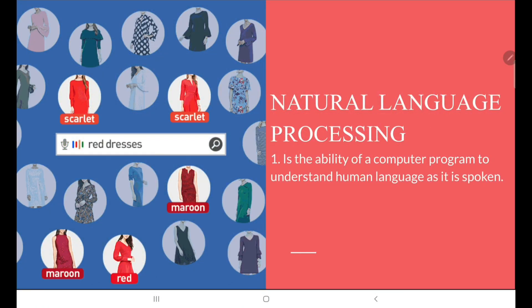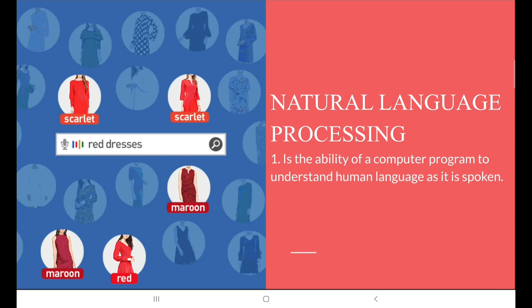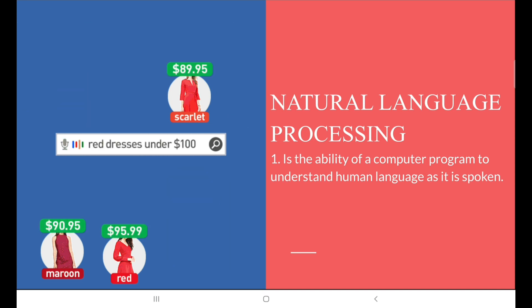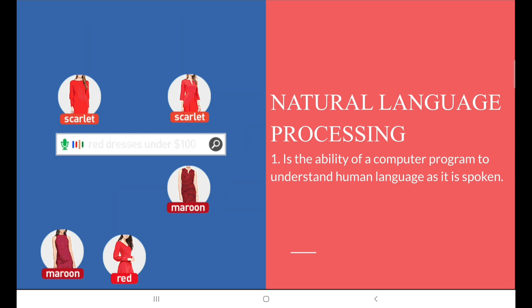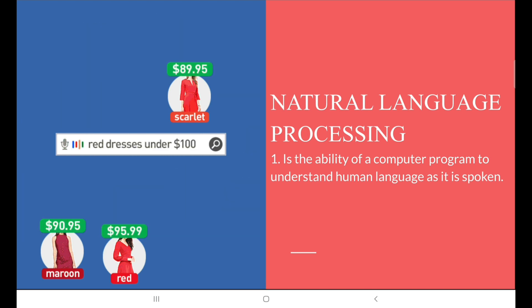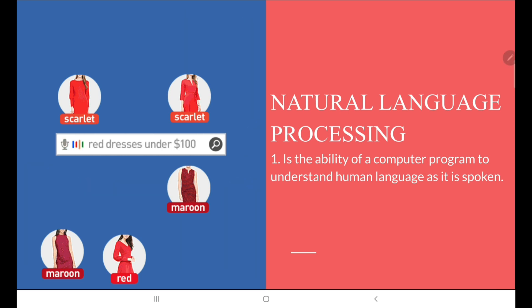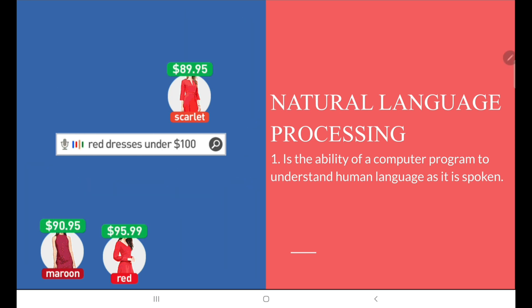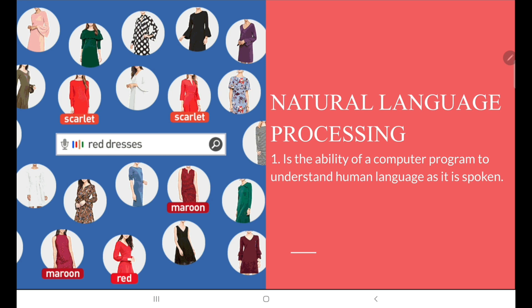Natural Language Processing: as you can see in the image, this system has the ability to understand human language as it is spoken. It will give you search results according to the voice being inserted into the system. For example, if the person is searching for dresses, it shows all dresses; red dresses — all the red dresses; red dresses under $100 — then all the red dresses under $100.